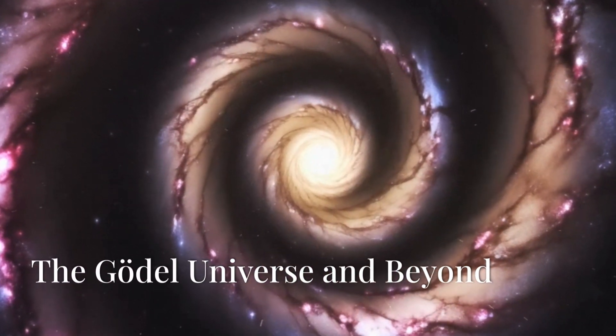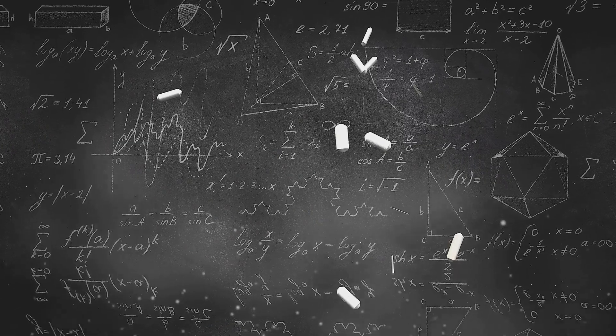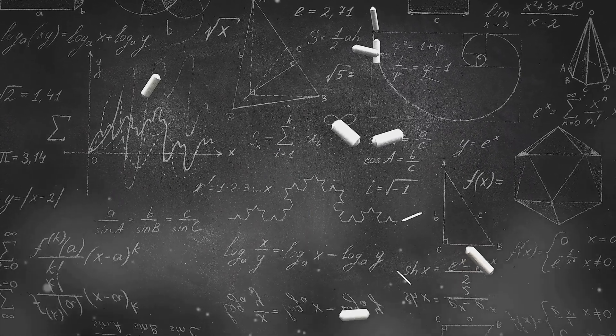The concept of a rotating universe is not new to the world of physics. In 1949, the renowned mathematician Kurt Gödel, a close friend of Albert Einstein, proposed a solution to Einstein's equations of general relativity that described a universe in which time travel would be theoretically possible.